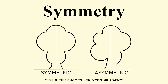In logic, a dyadic relation R is symmetric if and only if, whenever it's true that RAB, it's true that RBA. Thus, 'is the same age as' is symmetrical — for if Paul is the same age as Mary, then Mary is the same age as Paul. Symmetric binary logical connectives are AND, OR, biconditional, NAND, XOR, and NOR.